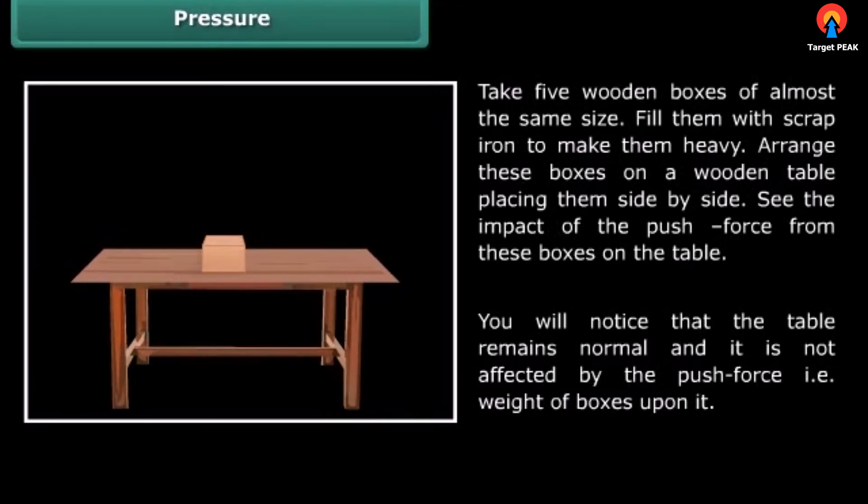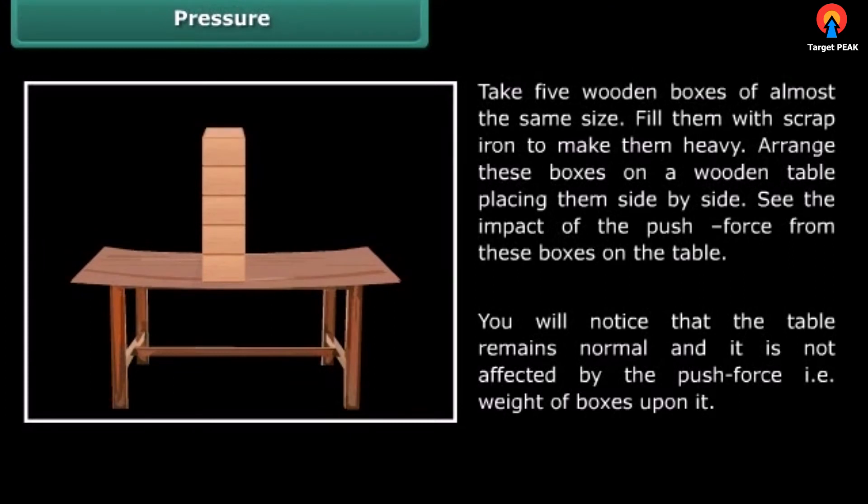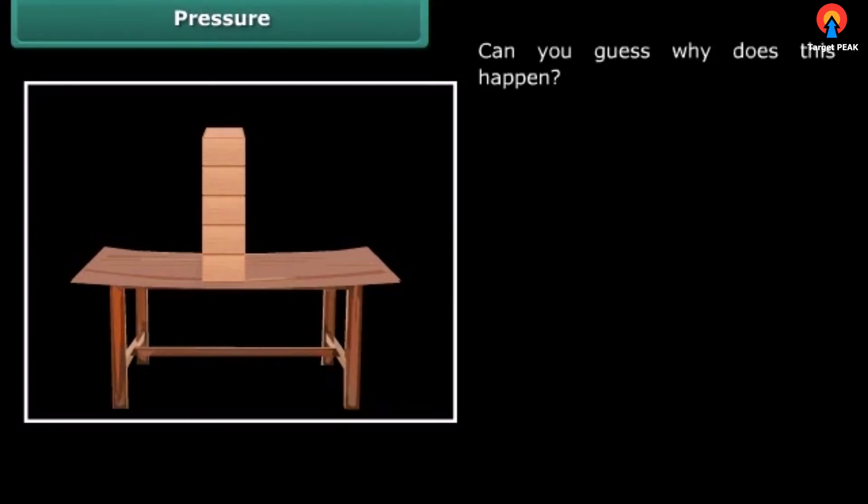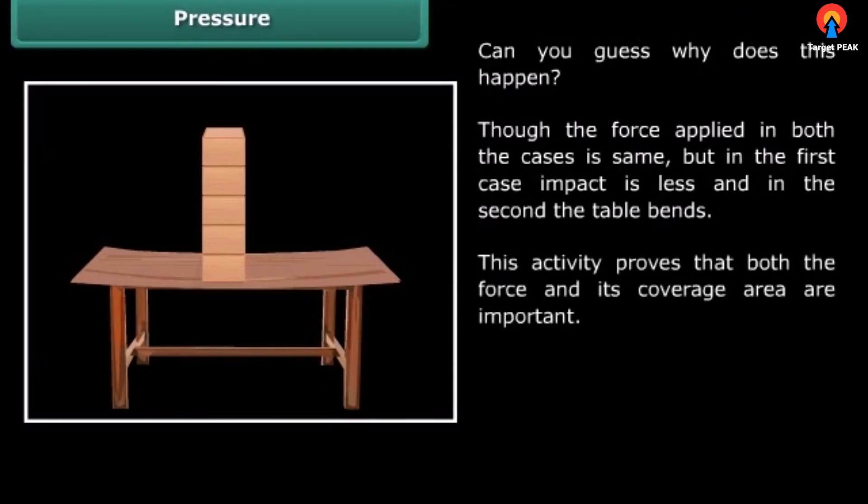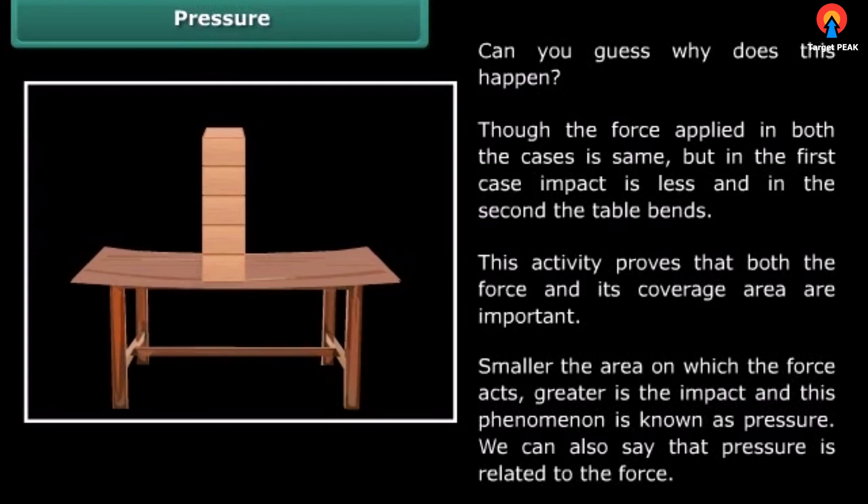Now rearrange these boxes on the same table, placing them towards the center and one over the other. Now see the impact. In this arrangement, the table either bends or breaks under the weight of boxes. Can you guess why this happens? Though the force applied in both cases is the same, but in the first case impact is less and in the second the table bends. This activity proves that both the force and its coverage area are important. Smaller the area on which the force acts, greater is the impact, and this phenomenon is known as pressure. We can also say that pressure is related to the force.